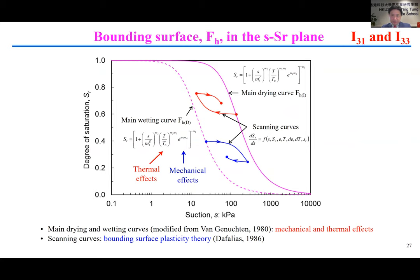In light of the theoretical framework, particularly the stress state variables I3-1 and I3-3, we introduced the bounding surface FH for modeling water retention behavior in the S and Sr plane. The change of Sr with S is modeled as an elastoplastic process. A main drying curve and a main wetting curve are used to model hydraulic hysteresis. Any state in the S-Sr plane bounded by the main drying and wetting curves is described as a scanning curve, determined using bounding surface plasticity theory with corresponding mapping rules.